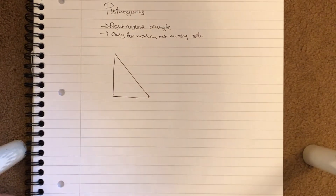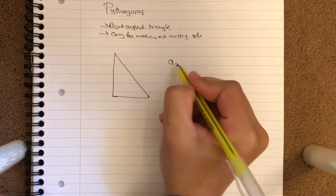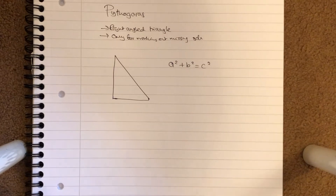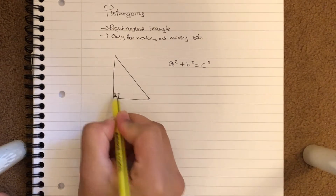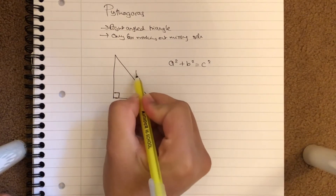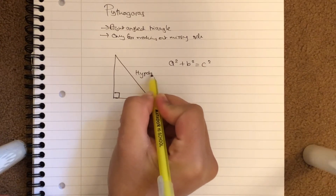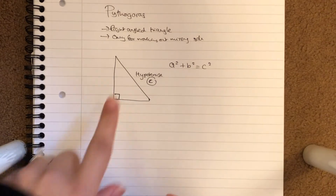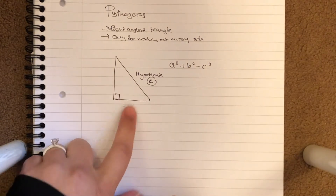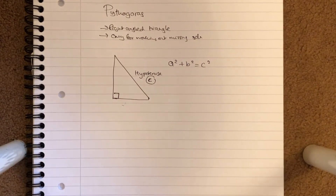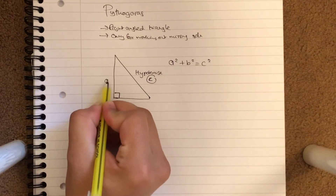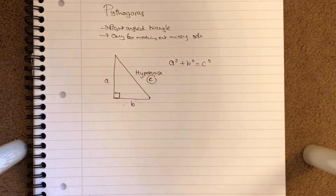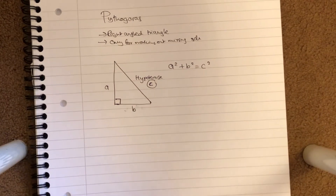The formula for Pythagoras' theorem everybody knows is a squared plus b squared equals c squared. The side opposite the right angle is going to be called the hypotenuse. The hypotenuse is always, always, always going to be c — the diagonal side, the side opposite the right angle. The other two sides can be a or b; it doesn't really matter as long as the hypotenuse is c.